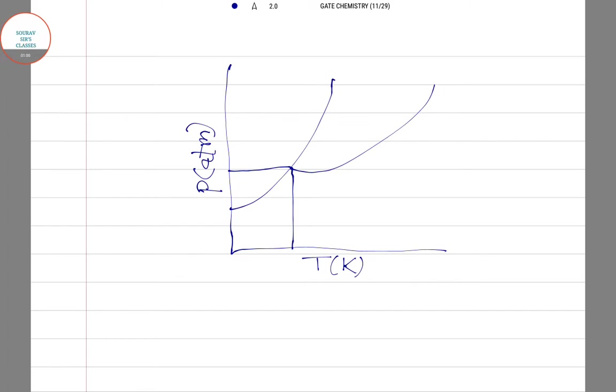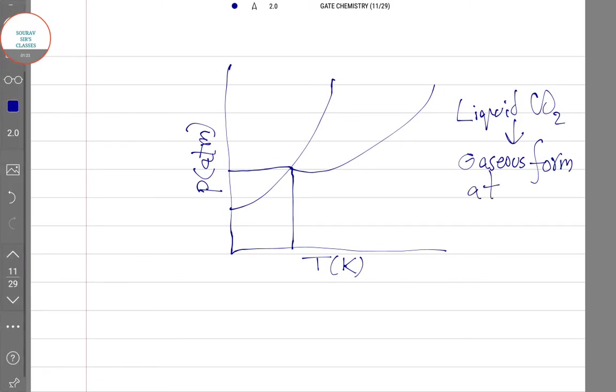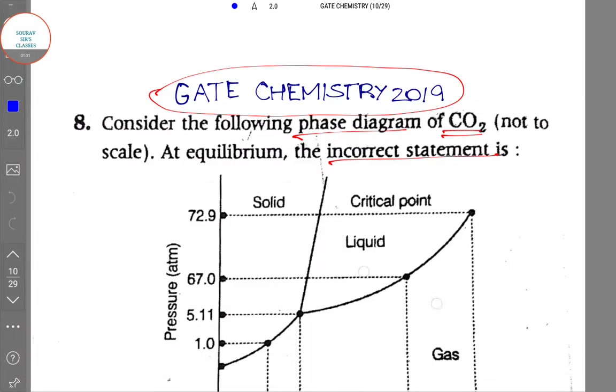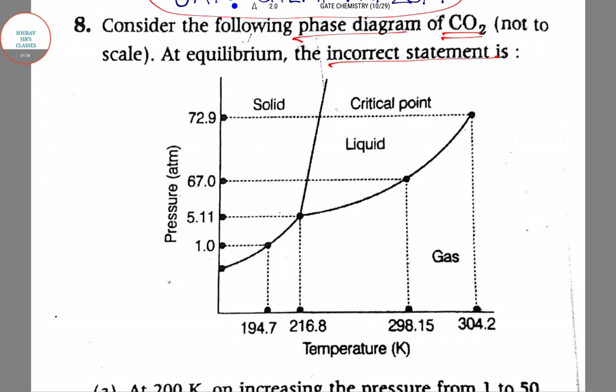Over here we can see that liquid CO2 can be converted into its gaseous form at 5.11 atmosphere. This we can see from our diagram.